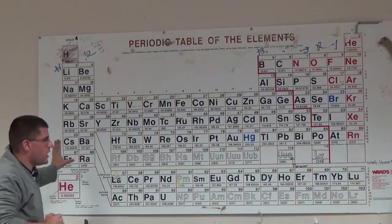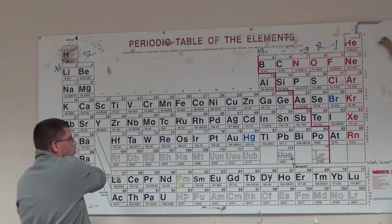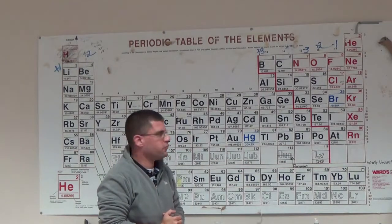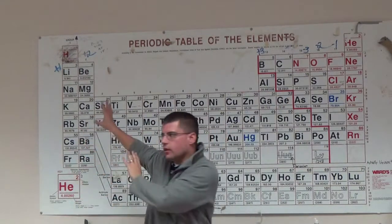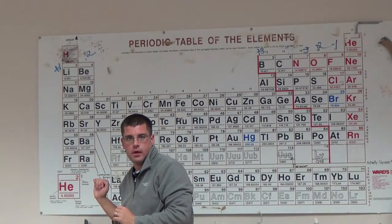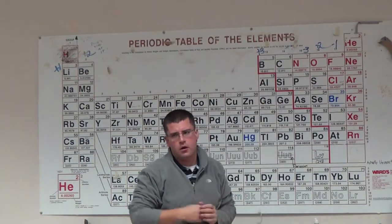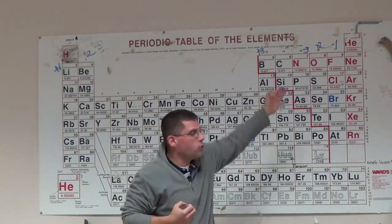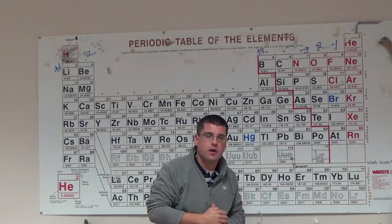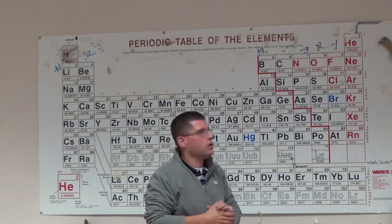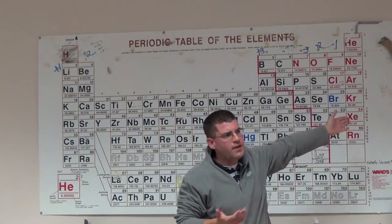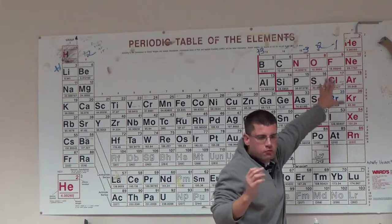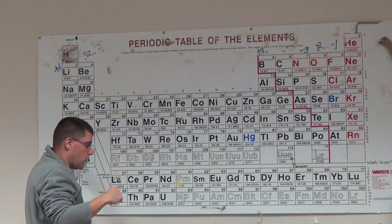As you go diagonally up and to the right on the periodic table, the ionization energy increases. Over on the left side, elements want to give away valence electrons. Over on the right side, elements are going to want to gain electrons, not give away valence electrons. So you're going to have to use a lot of energy to pull valence electrons away from these elements. These have higher ionization energies, up to the noble gases, which have the highest ionization energy because they have a full outer shell and are not going to give away those valence electrons.